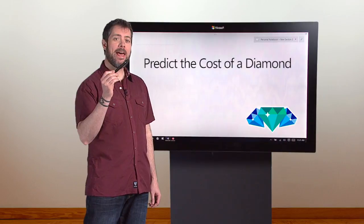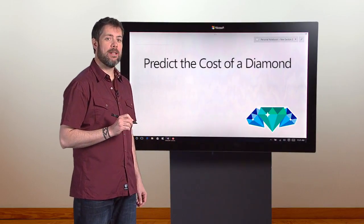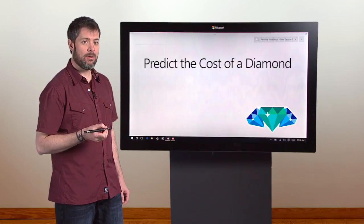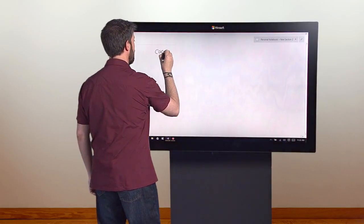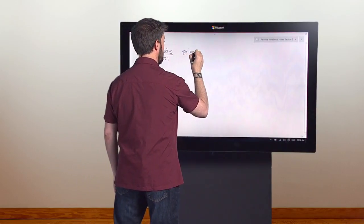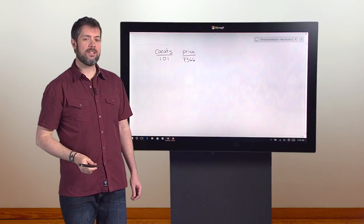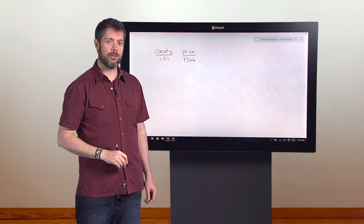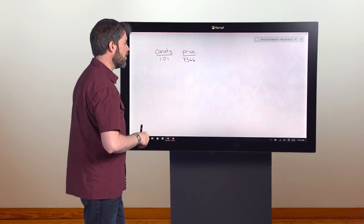I take a notepad and a pen into the jewelry store and I write down the price of all the diamonds in the case and how much they weigh in carats. Starting with the first diamond, it's 1.01 carats and $7,366. Now I go through and do this for all of the other diamonds in the store.